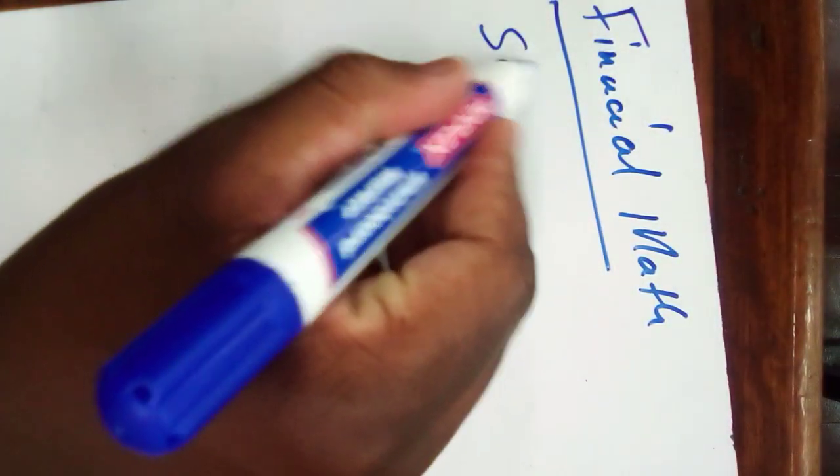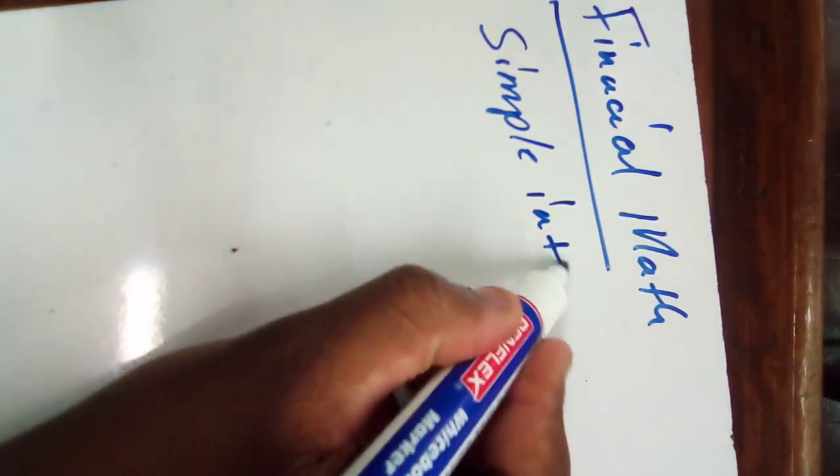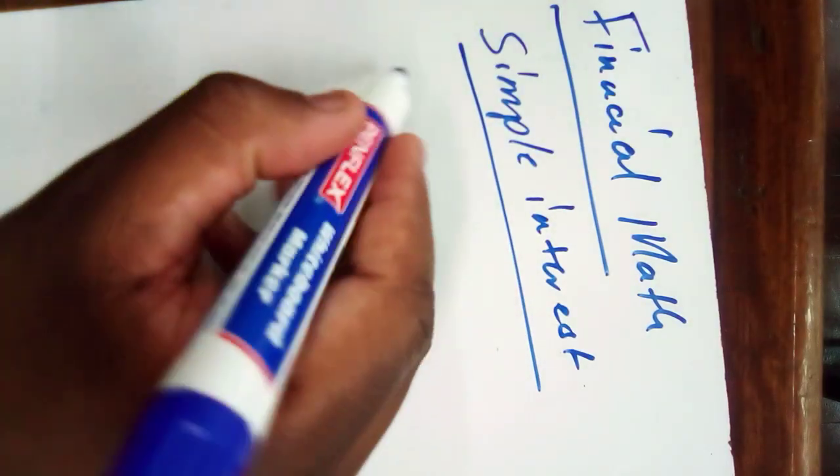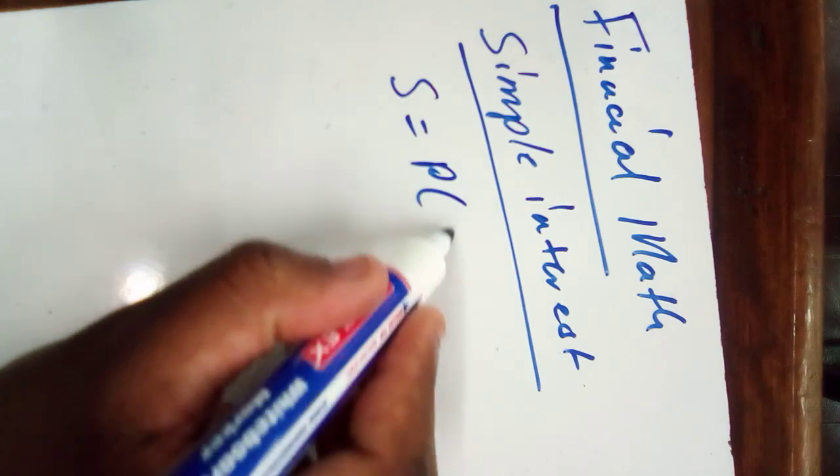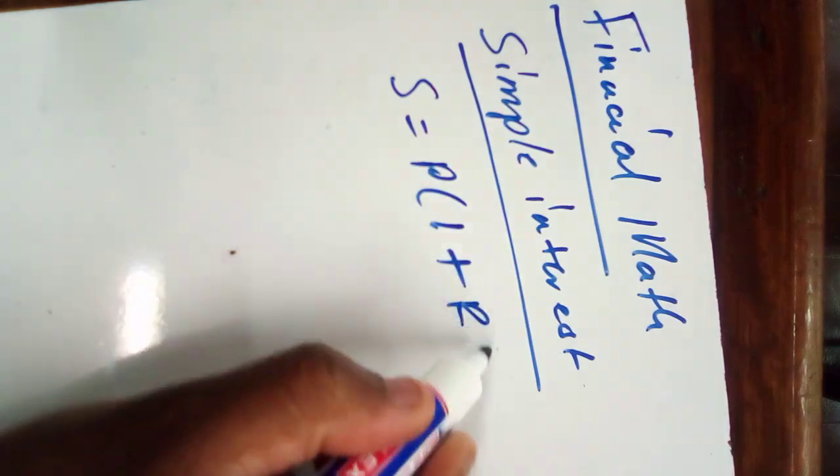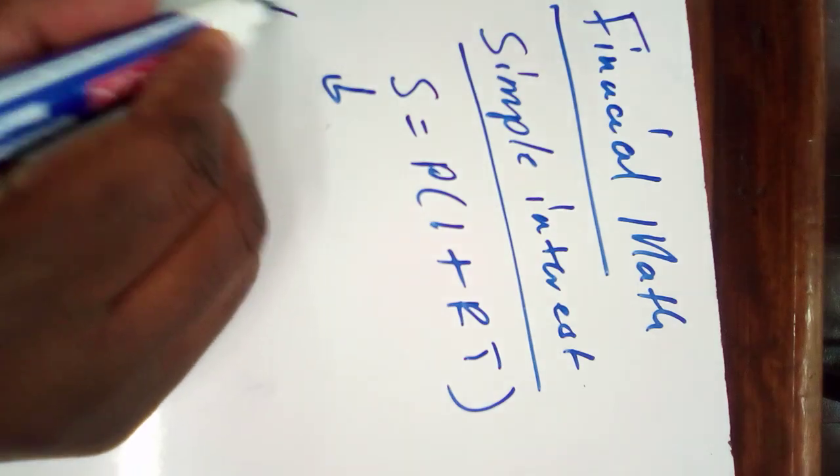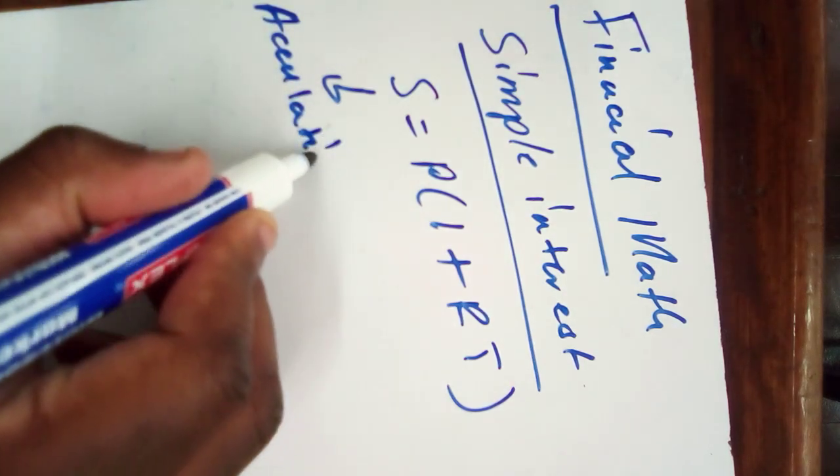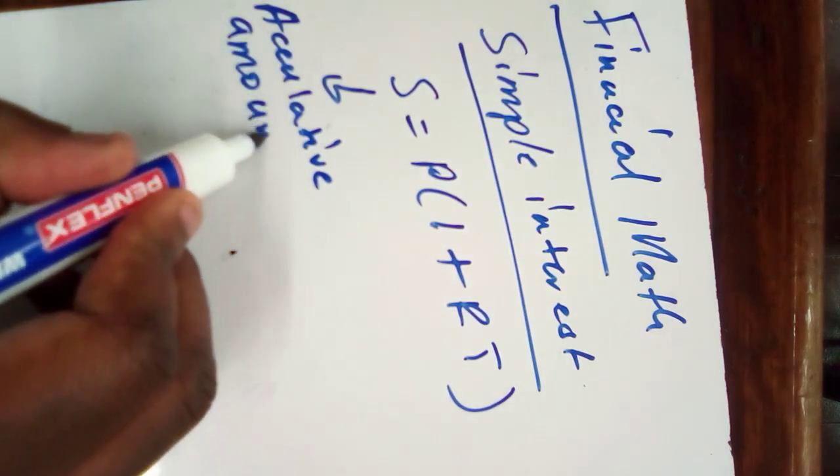So in financial maths, we have simple interest. Simple interest is when you can use S equals to P in brackets 1 plus RT, whereby S is accumulative amount.